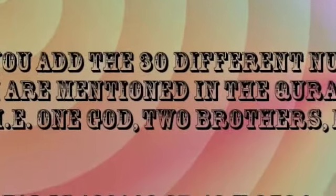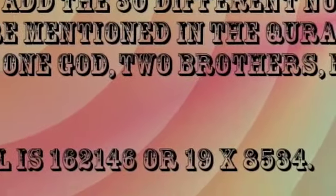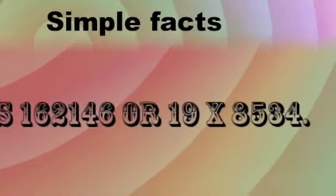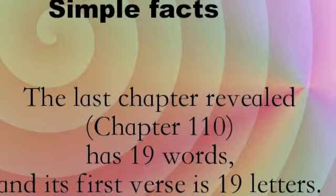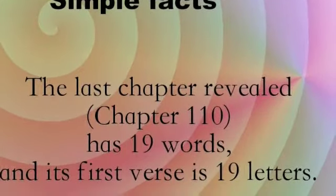The Quran talks about 30 different numbers; if you add them all up, the total is 19 times 8,534. The last chapter revealed has 19 words, and its first verse is 19 letters.